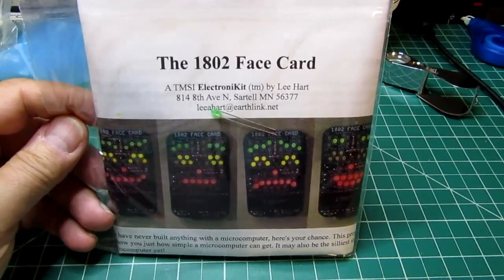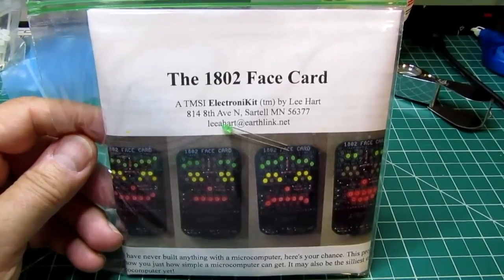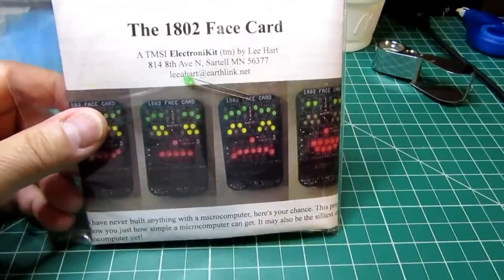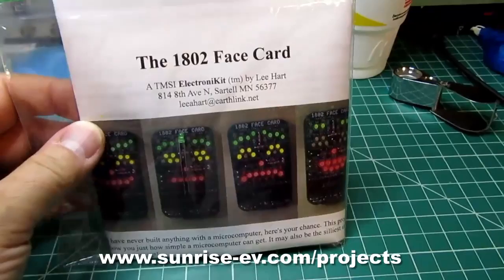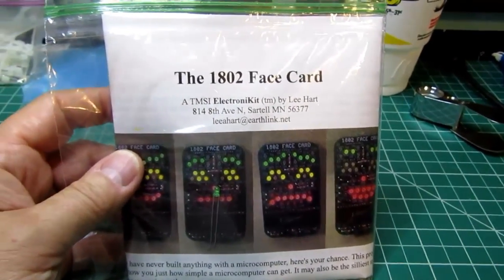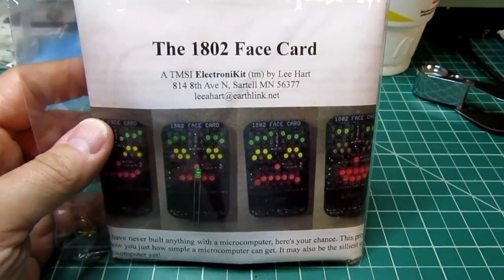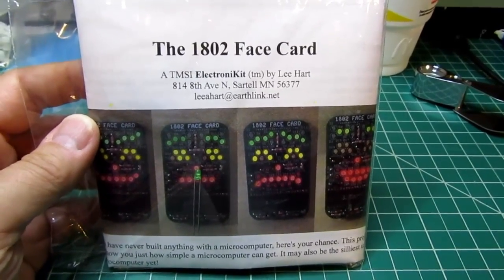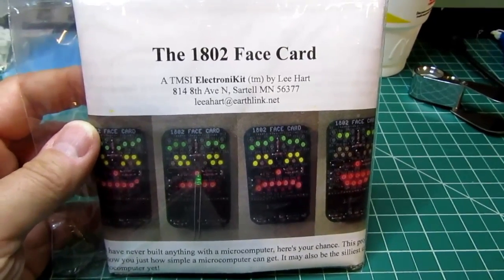All right, today's project is to build a fun little kit, the 1802 Face Card, put out by Lee Hart. This is on his website, which I'll put something in the captions to show. He has a whole series of vintage microprocessor-based kits and specializes in things that can use the 1802 microprocessor in very interesting and innovative ways.